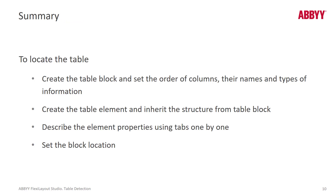We covered a lot of ground very quickly here. The first step in creating a table in FlexiLayout Studio is to create a block and include the column names from left to right. Then create the table element and point to that table block. Column names will come down, and at that point you can describe the element properties — header, footer, rows — and there are quite a few different settings you can adjust to get your FlexiLayout table collection working perfectly. When you've hit that point, be sure to map your table block to your table element.